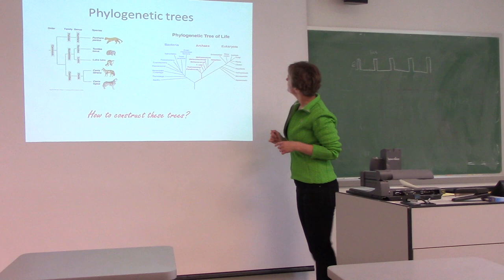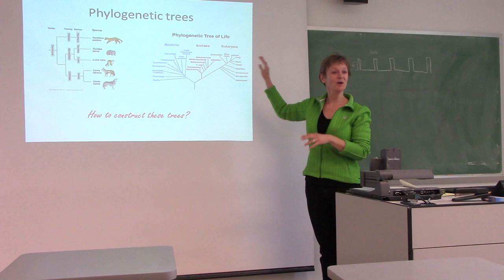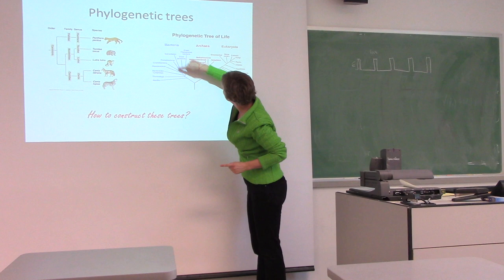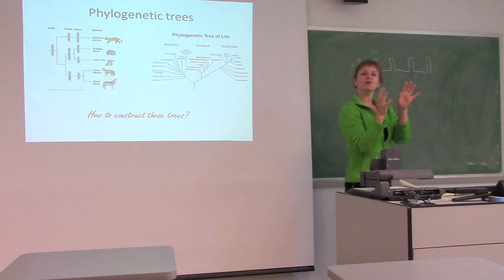Here's another example: a phylogenetic tree of life. I'm not a biologist, so I can't pretend to explain all of these, but we understand the idea — these two are more similar than they are to a third one, etc. So it's telling us how species evolve, basically.